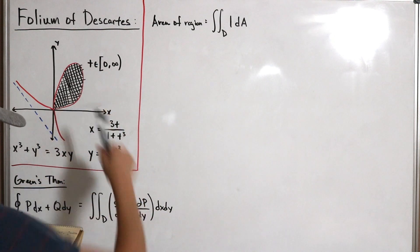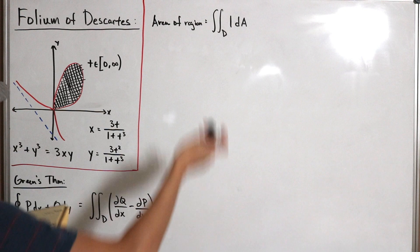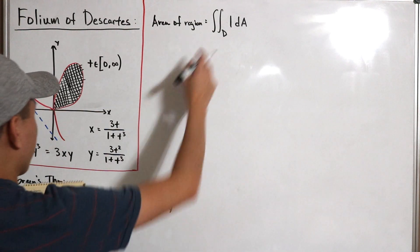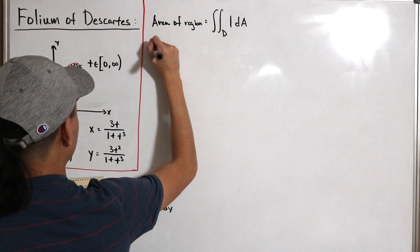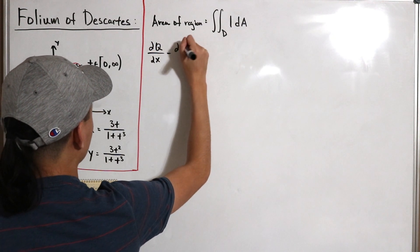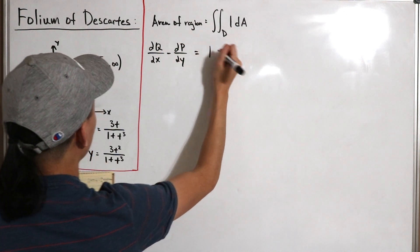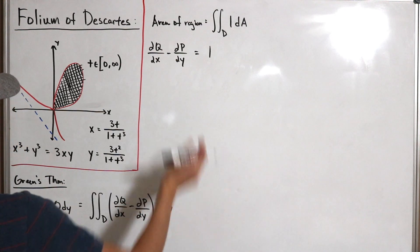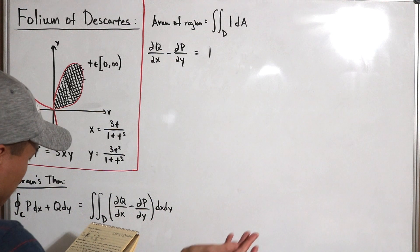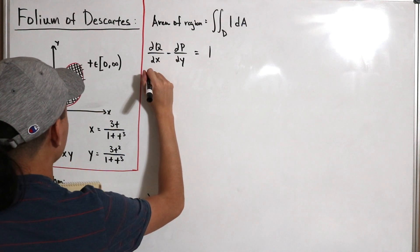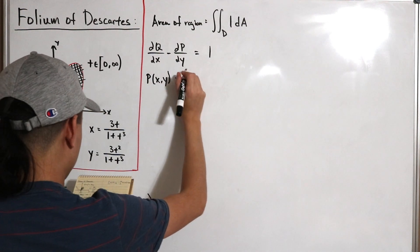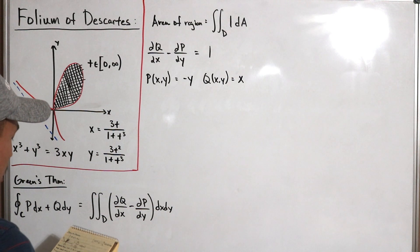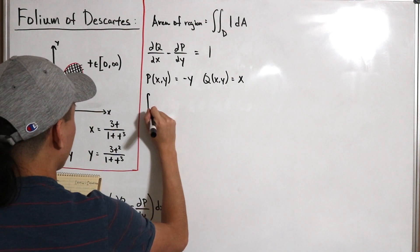Now let's get to the main part. We're starting backwards — going from a double integral and converting back into a line integral. We need ∂Q/∂x − ∂P/∂y = 1. By inspection, we can choose P(x, y) = −y and Q(x, y) = x, which satisfies this condition.